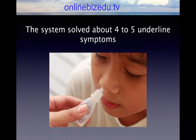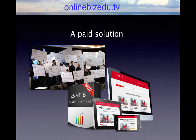What makes this process so much different than most everybody else out there is that the system solves about four to five underlying symptoms for the problem, which actually produces four to five full information deliverables for the target prospect. And when it comes time to give them a paid solution, they will take your recommendation.